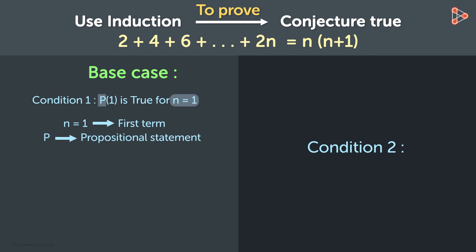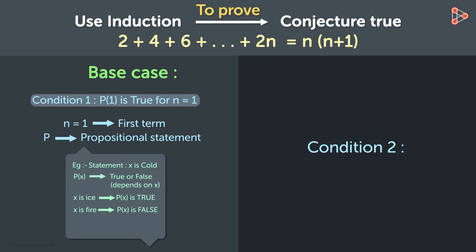P is a propositional statement that has a definite value. This value can be true or false. Suppose we have the statement x is cold. Then P of x can be true or false depending on what x is. When x is ice, P of x is true and when x is fire, P of x is false. So we know the first condition to prove a statement true.